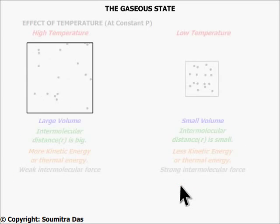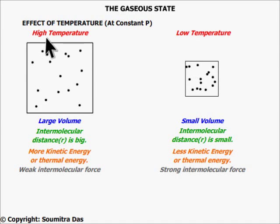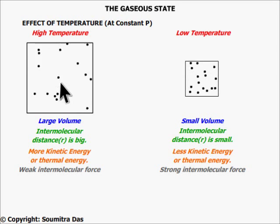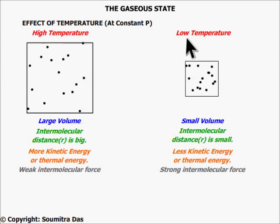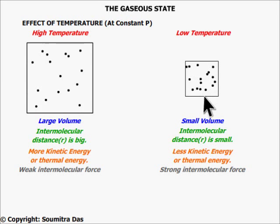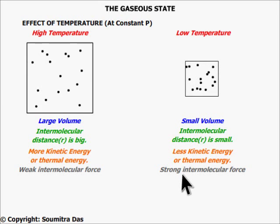Now let us see the effect of temperature. At high temperatures, the random motion of the gas molecules is very fast, so the intermolecular attractive forces become very weak. At low temperatures, the random motion velocity reduces considerably, and so does the volume. The intermolecular attraction becomes pronounced. In other words, gas laws do not hold good at low temperatures.